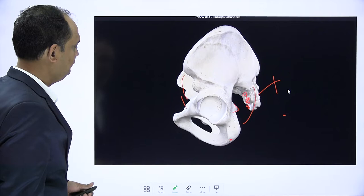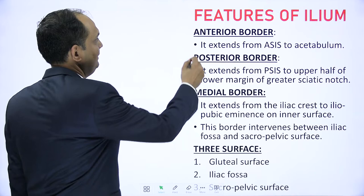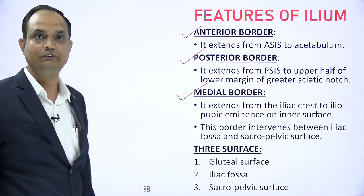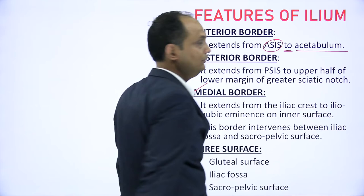Now we look at the features of the ilium, because there are three bones: ilium, ischium, and pubis. When you see the ilium, it has an anterior border, posterior border, and medial border, and three surfaces: gluteal surface, iliac fossa, and sacro-pelvic surface. The anterior border starts from the anterior superior iliac spine to the acetabulum. In the diagram, this is your acetabulum and this is the anterior superior iliac spine — so this is your anterior border of the ilium.